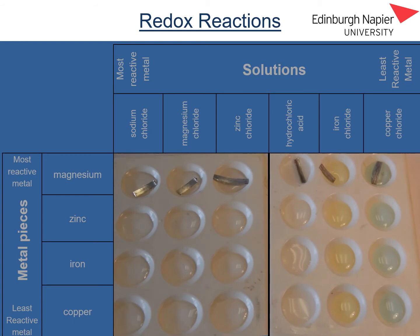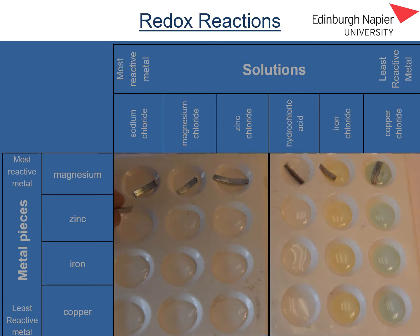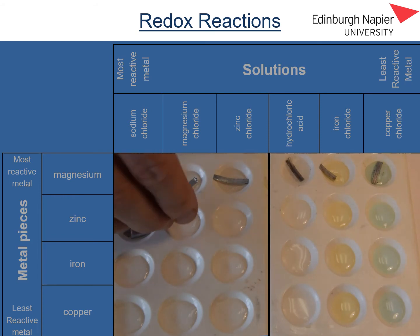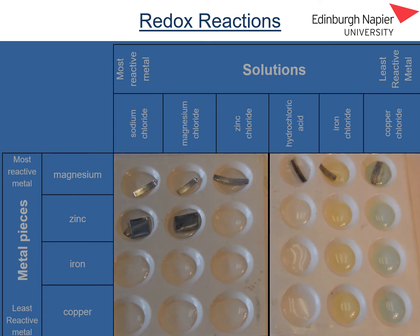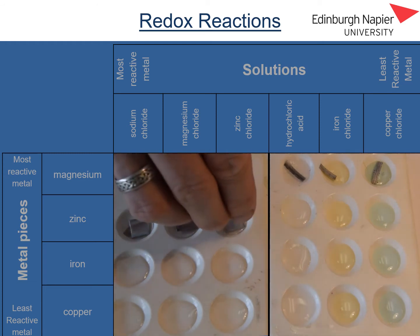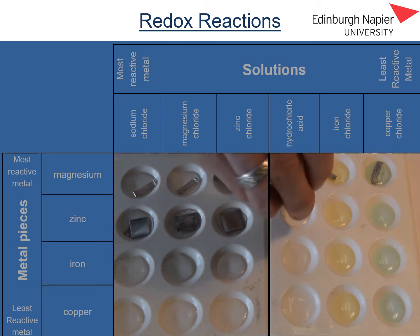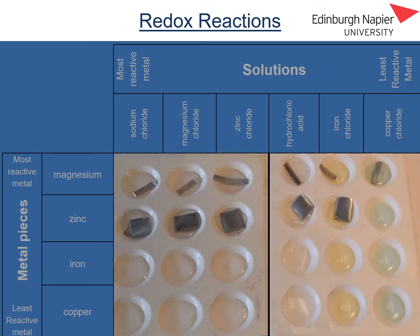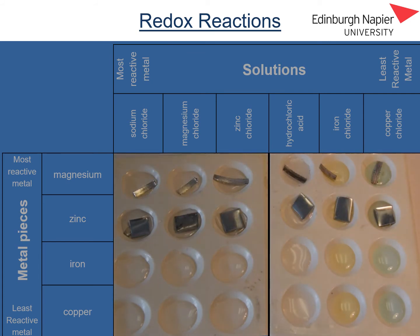Now to the next row down I'm going to add some pieces of zinc metal. A piece of zinc is being added to the sodium chloride solution, zinc to the magnesium chloride solution, to the zinc chloride solution, to the hydrochloric acid solution, to the iron chloride solution, and finally to the copper chloride solution.